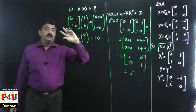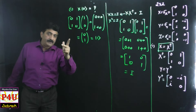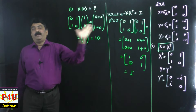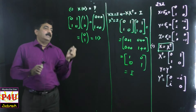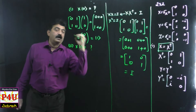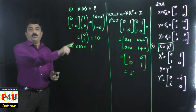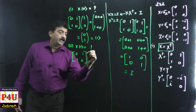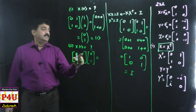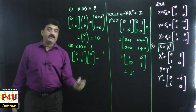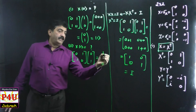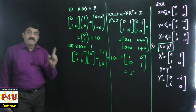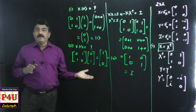That means when X operates on ket |0⟩, it gives you ket |1⟩ - the 0 state is flipped to 1 state. Now let us see what will happen if X operates on ket |1⟩. X on |1⟩: [0, 1; 1, 0] times [0; 1] gives first element = 0×0 + 1×1 = 1, second element = 1×0 + 0×1 = 0. So the result is [1; 0] which is ket |0⟩. When X operates on |1⟩, it gives you ket |0⟩.